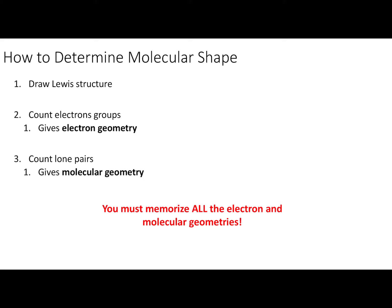In summary: when determining molecular shape, step one is to draw the correct Lewis structure. Step two is to count the number of electron groups around the center atom — this determines the electronic geometry. Step three is to count the number of lone pairs on that atom. Combining electron groups and lone pairs tells you the molecular geometry. There's no easy shortcut; you do have to memorize these geometries. I recommend flashcards covering the number of electron groups, lone pairs, the name, and the bond angle of each geometry.